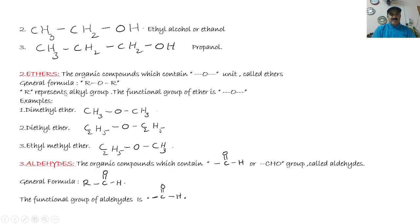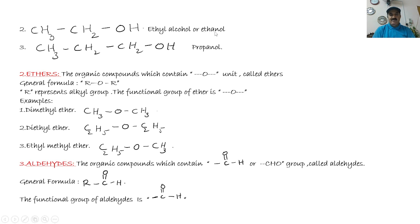Another example: CH3CH2OH. In the common system this is ethyl alcohol. In the IUPAC system — IUPAC stands for International Union of Pure and Applied Chemistry — this compound contains two carbon atoms. The alkane with two carbons is ethane, and one hydrogen is replaced by O-H, so its name becomes ethanol. The 'e' of ethane is converted to 'ol'.